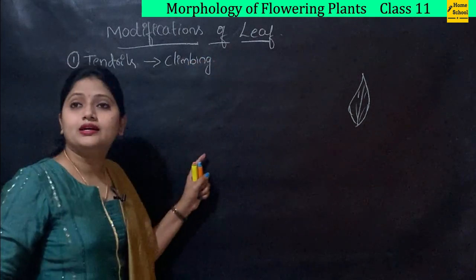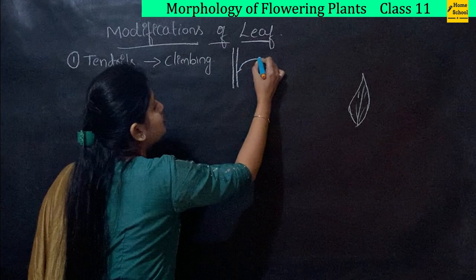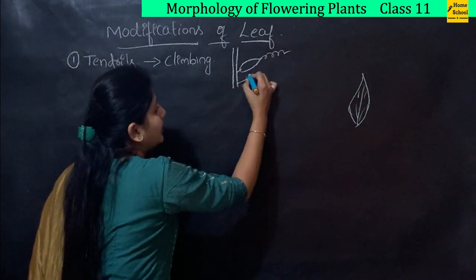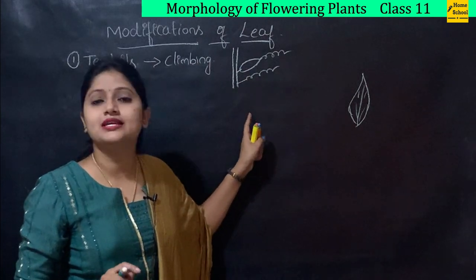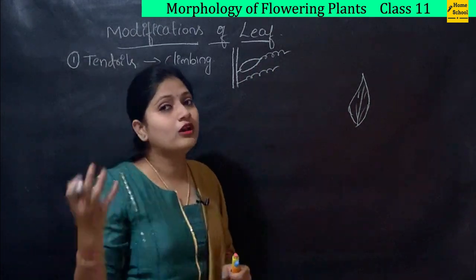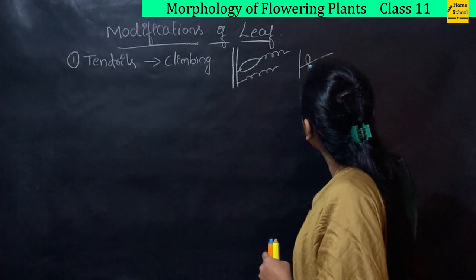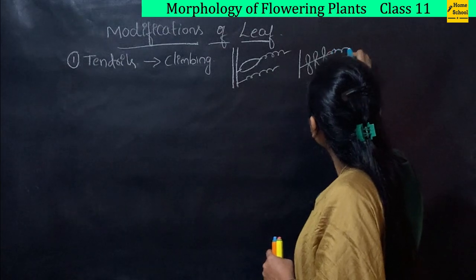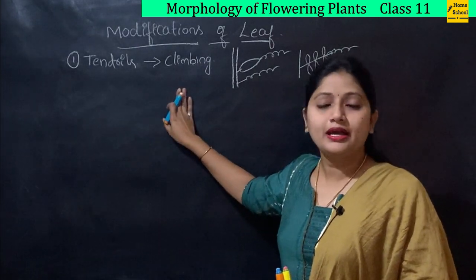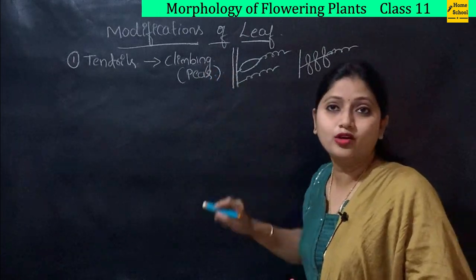You can see a tendril at the apex of a leaf, or sometimes directly the whole leaf itself is modified into tendrils. Or in a pinnately compound leaf, the apex is modified into a tendril. Tendrils are mainly for climbing purposes and an example is the pea plant.